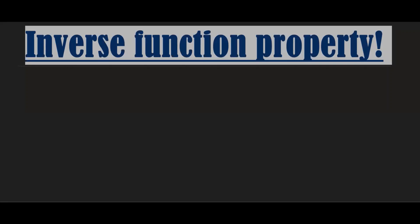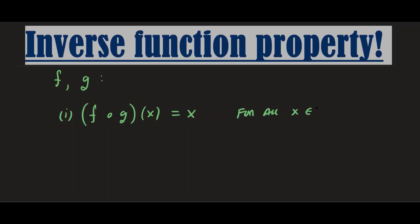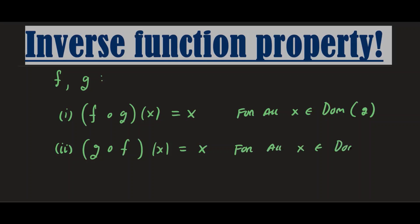Given any two functions f and g, here's what you want to do. First, you want to show that the composition f circle g of x is equal to x for all x in the domain of g. And you also want to show the composition in the reverse direction, g circle f of x, is also equal to x for all x in the domain of f.